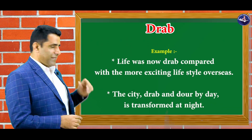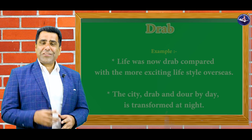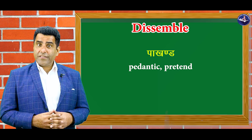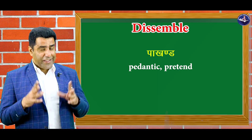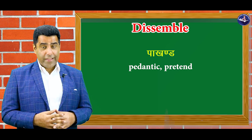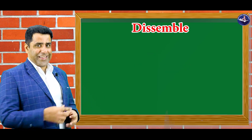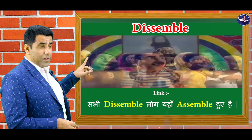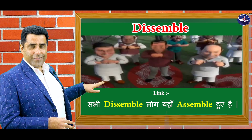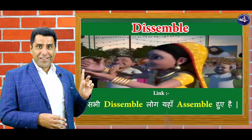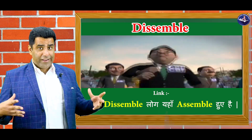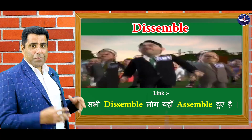Let's see the sentence. Kaisey drab word ko hum use karna chahiye? So our next word is dissemble — paakhand, paakhandi. Aur kaisey yaad karaayein? Dekhaiye, ismein word hai 'assemble'. Assemble kya hota hai — kattha karna ya kattha hona. Toh ye raha humara link. Sabhi dissemble log yahan assemble huye hain, sabhi paakhandi log yahan par katthe huye. Toh dissemble–assemble — dono par underline kar do.